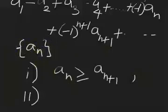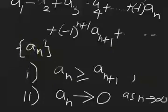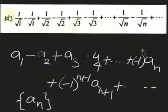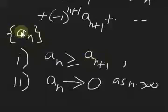The second condition is that if you take the limit of the sequence, the limit of a sub n as n tends to infinity should equal zero. So to check whether an alternating series is convergent or divergent, you have to verify these two conditions: the sequence is decreasing, and the sequence decreases to zero.